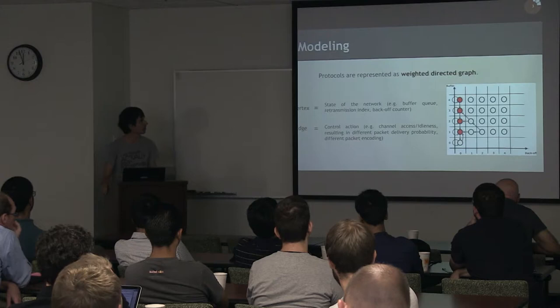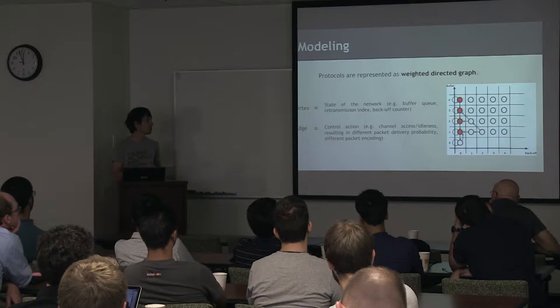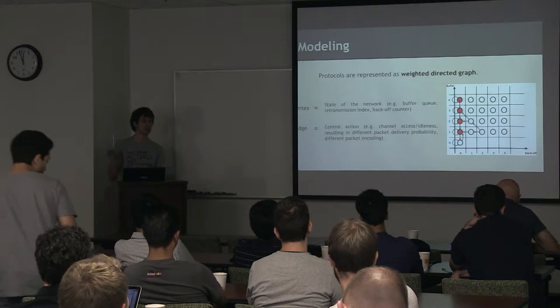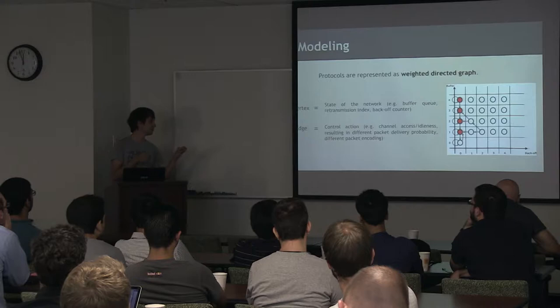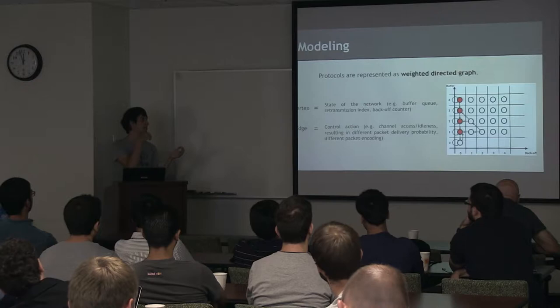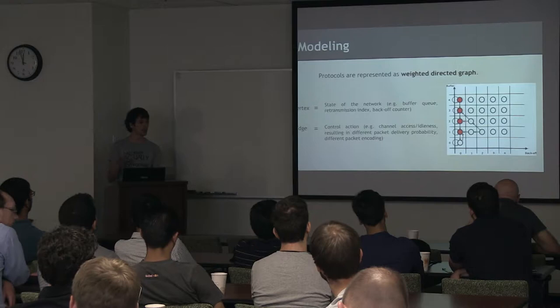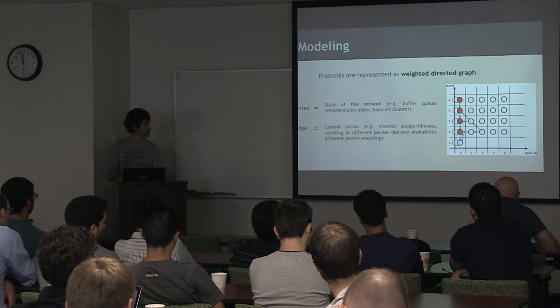The new modeling we choose is to model the protocols by weighted directed graph, where each vertex represents a state of the network. For example, for a state, you have the first terminal with a buffer queue with one packet, the second terminal with two packets and so on. Obviously, the variable describing the networks depends on the protocol control you're looking at.